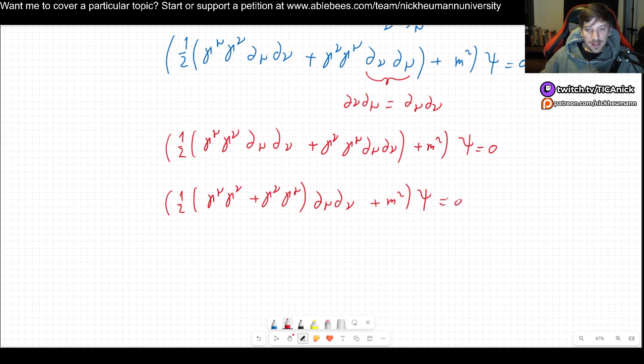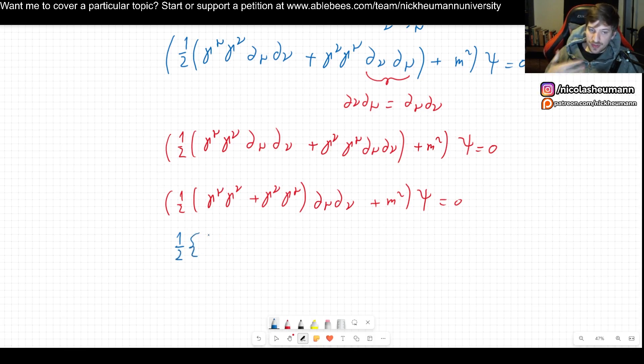So I have one half gamma mu gamma nu plus gamma nu gamma mu and I multiply by del mu del nu plus m squared psi. So what is it that I have in here? This you should immediately recognize. If not, don't worry, it's a matter of practice, but I want to emphasize the importance of this.